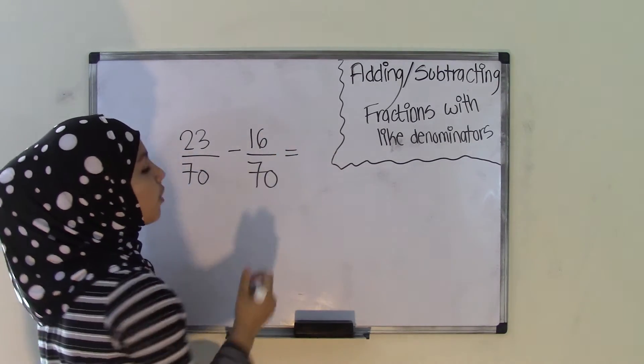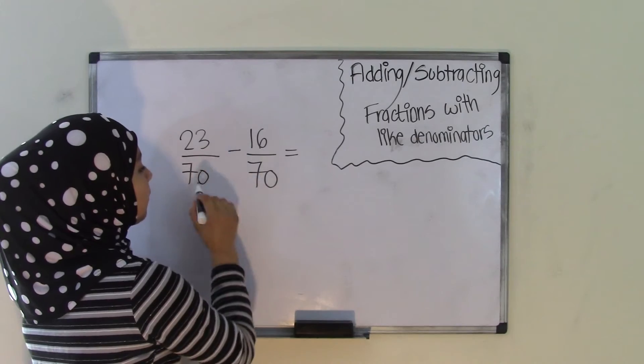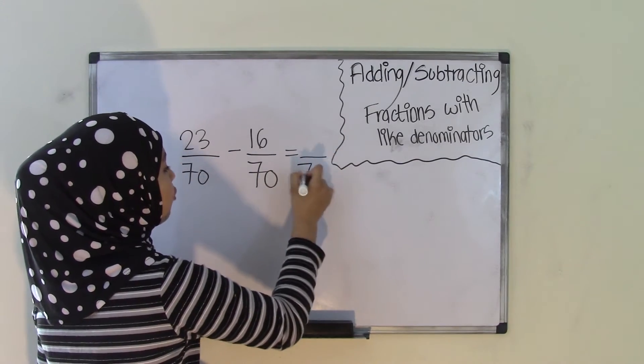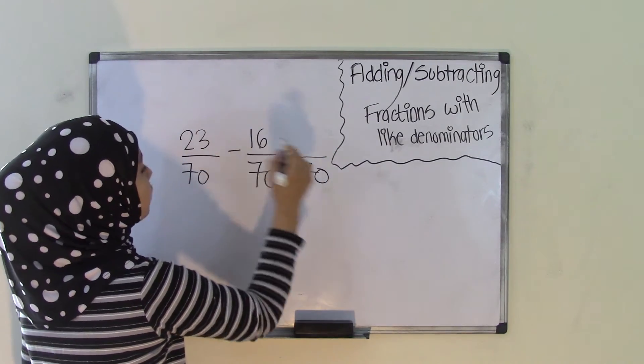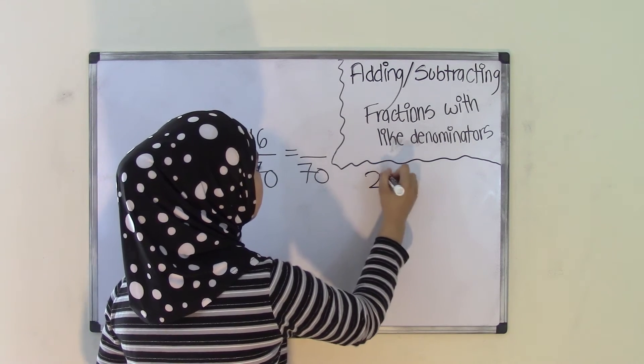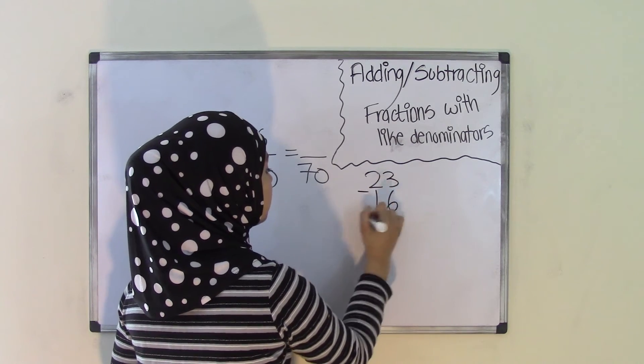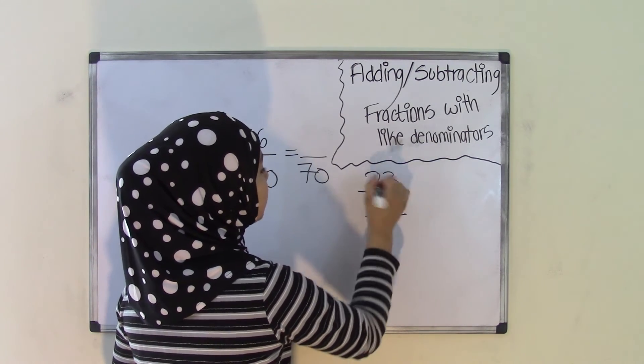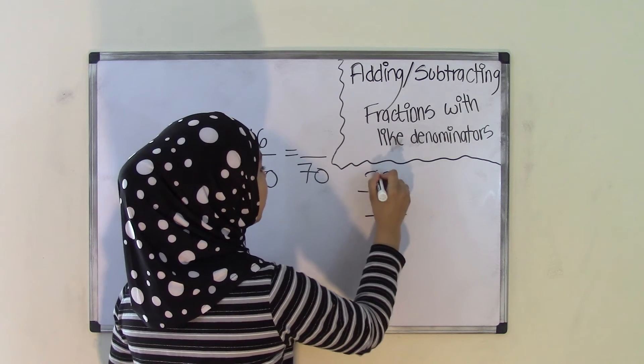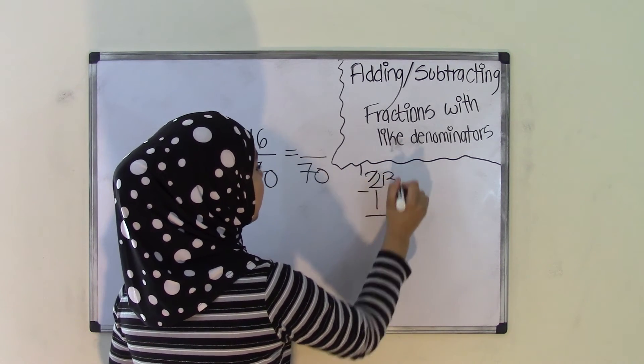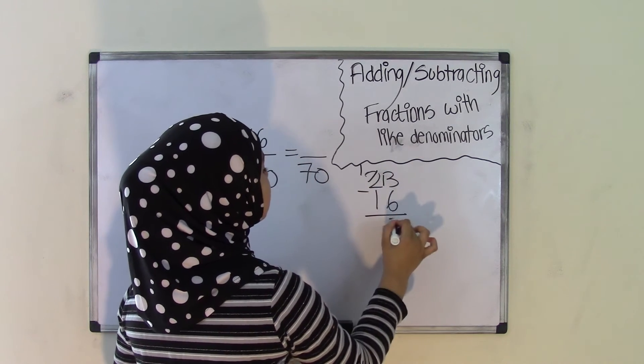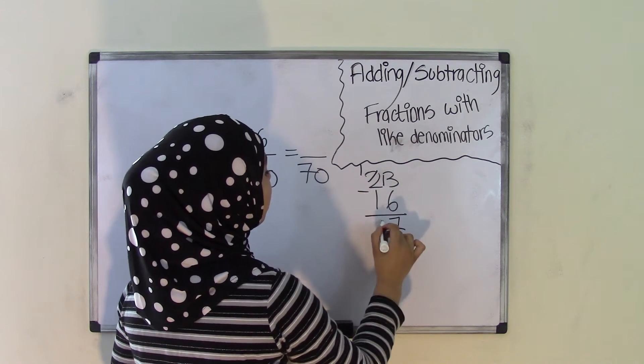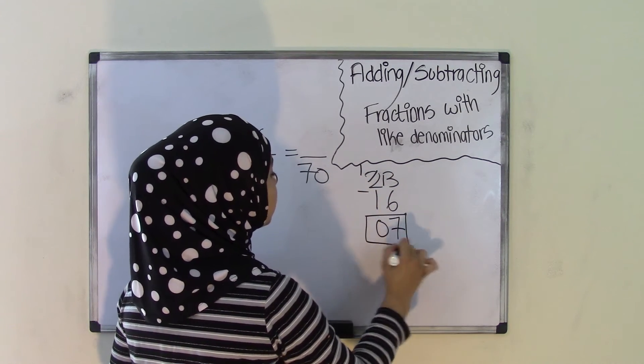Okay, so now you're going to get your difference by subtracting. So remember, denominator stays the same, so it's going to be over 70. Now, you have to subtract 23 minus 16. 6 take away 3, you can't do that, so you're going to have to borrow 1 from the 2 to make the 2 a 1. And now this becomes a 13. 13 take away 6 is 7. And 1 take away 1 is 0. And you get your difference of 7. That means 7 is going to be your numerator.